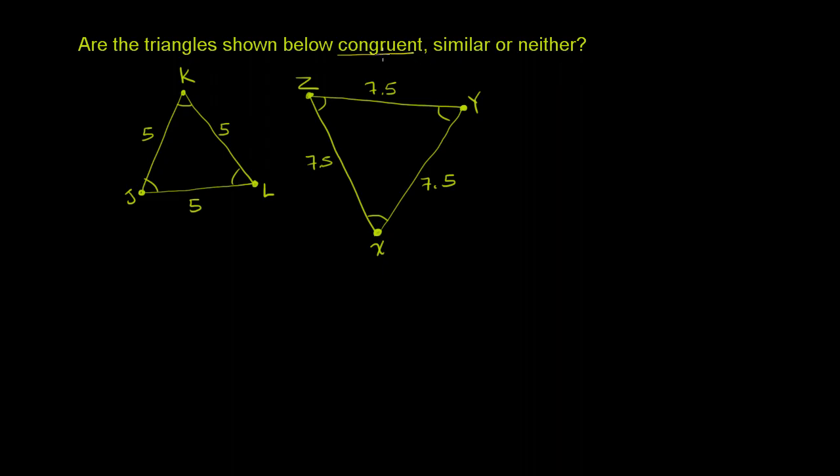For two triangles to be congruent, they have to have the same size and shape. Another way to think about it is, if you were to rotate or flip one shape, could you make it coincide with the other? Especially in the case of triangles, all of the corresponding sides and angles have to be the same.